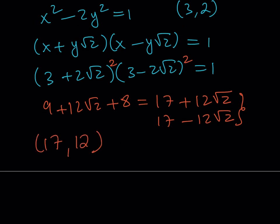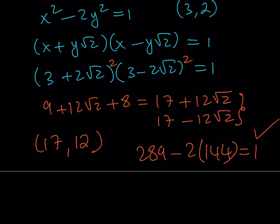This came up in one of the comments — someone asked about this solution because 12 is not a prime number. Now we can talk about it: 17 squared is 289, 12 squared is 144, 2 times 144 is 288, and 289 minus 288 equals 1. Yes, that satisfies our equation. If you take 3 plus 2√2 and raise it to the third power, you can find another solution, and so on. There are even recurrence relations that generate all solutions based upon the previous ones.